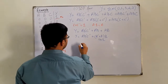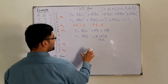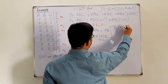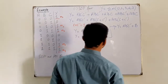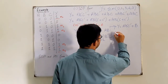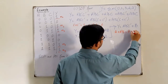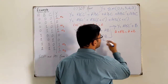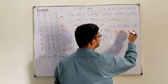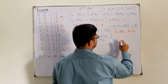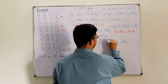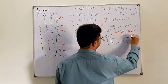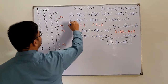Now we have B common in these two terms. Y = A'B'C' + (A' + A)·B, and A' + A = 1, and 1·B = B. So Y = A'B'C' + B. Using the property a + a'b = a + b, treating B as 'a', the function becomes Y = B + A'C'. This is the minimal sum of product form, and the previous expression was the canonical sum of product form.